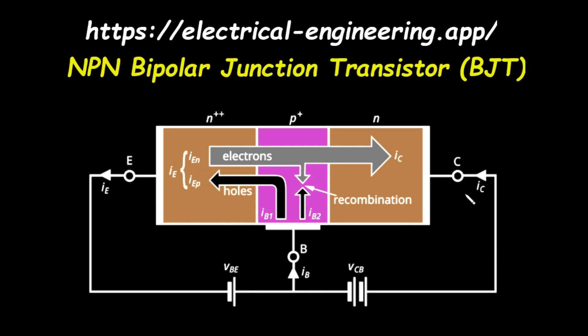The magic of the transistor lies in the ratio of these currents. Because the base is so thin and the emitter is so heavily doped, the base current I_B is very small compared to the collector current I_C. This means that a tiny change in the small base current can cause a huge change in the large collector current. This is the principle of current amplification, which makes the BJT one of the most important inventions in modern electronics.